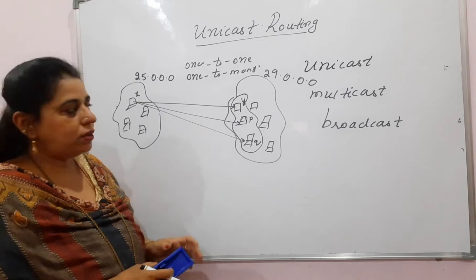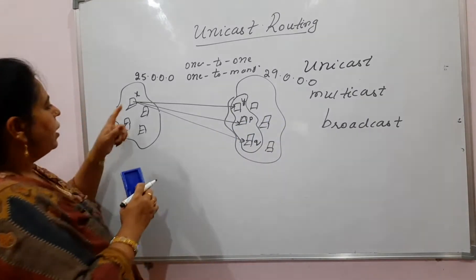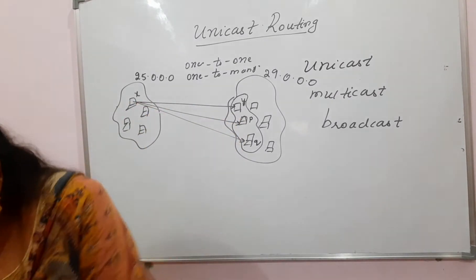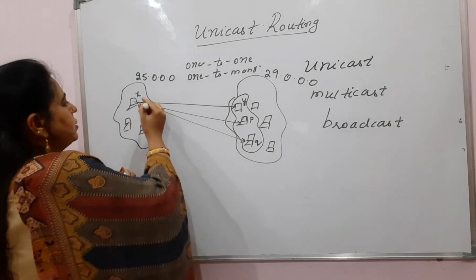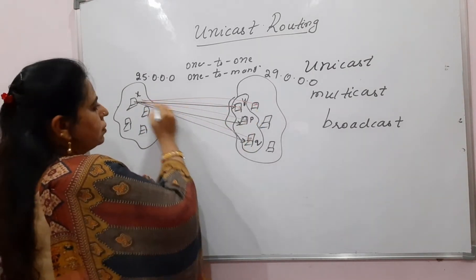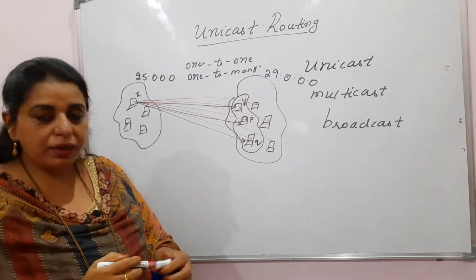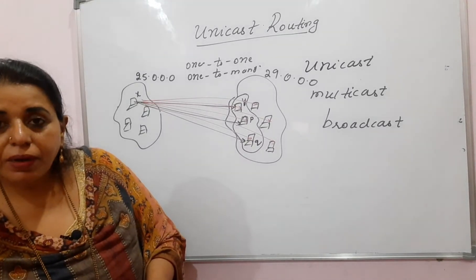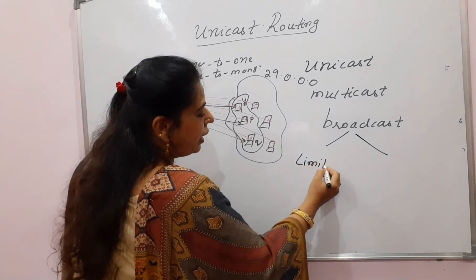Next we have broadcast. If this host wants to communicate with all the other hosts of another network — this, this, this, and this — it wants to communicate with all hosts present in the other network. We say it is a broadcast. Remember, broadcast has two types: one is limited broadcast and another is direct broadcast.